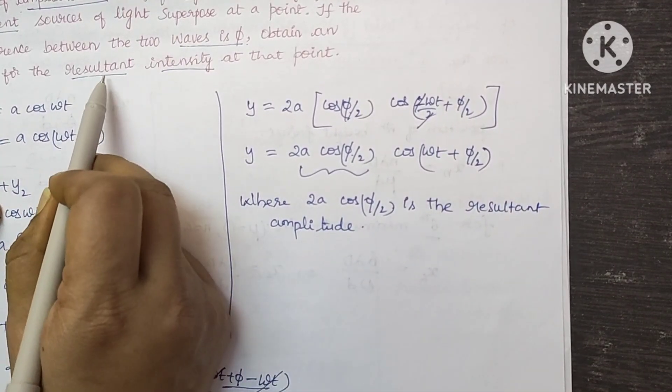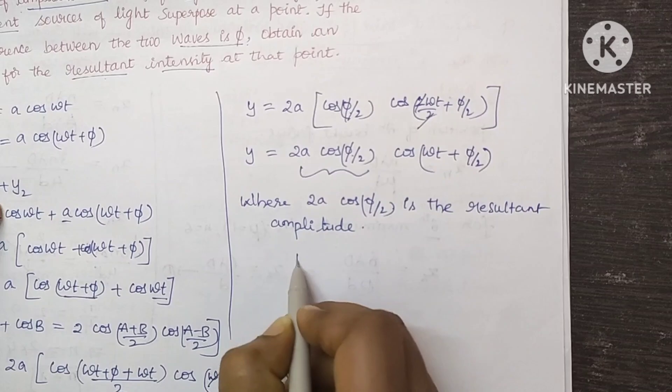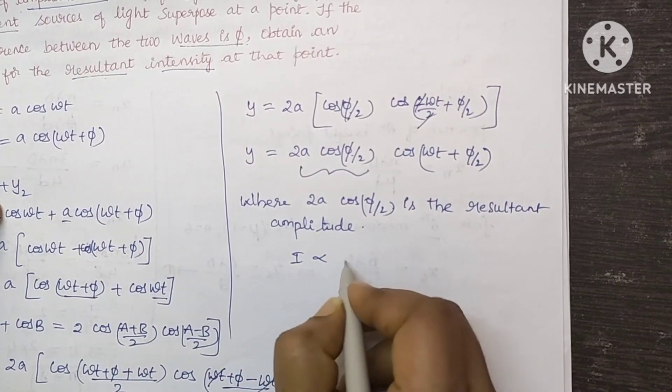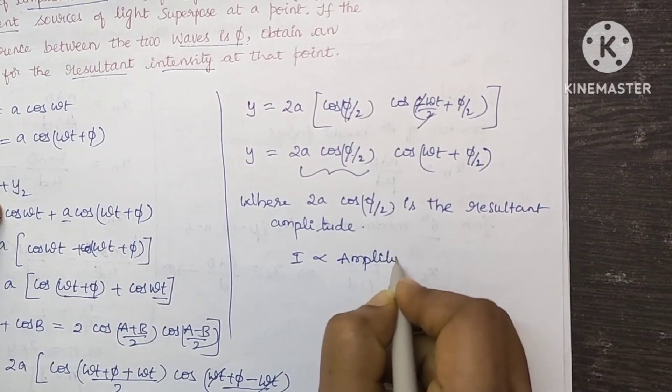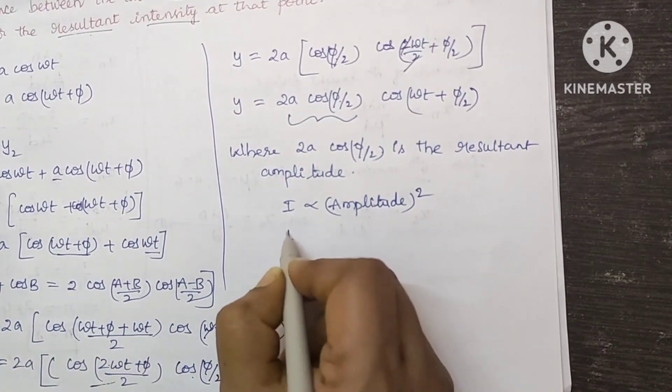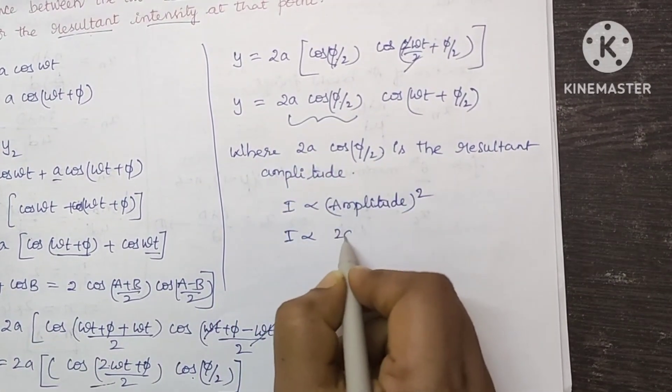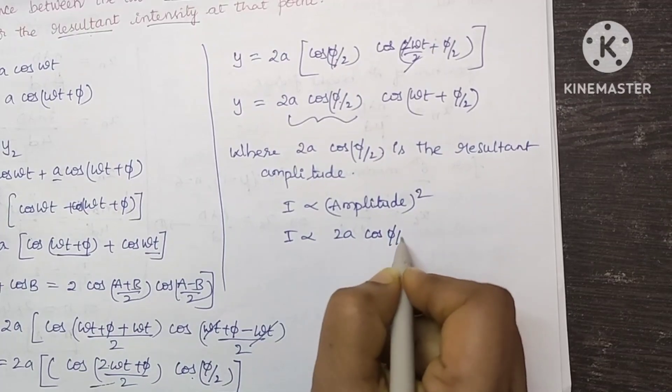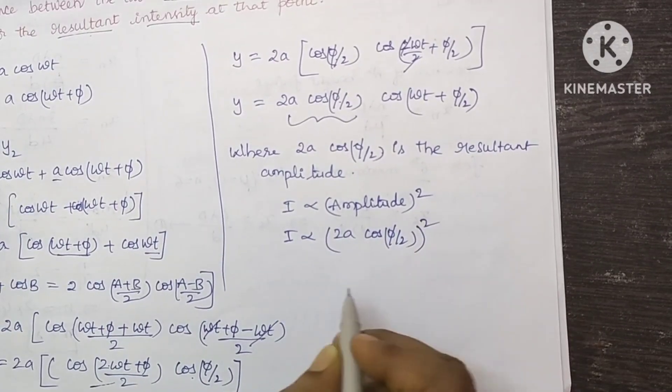But here they are asking to find the resultant intensity. We know that intensity is directly proportional to the square of the amplitude. So I is directly proportional to here 2A cos phi by 2 whole square.